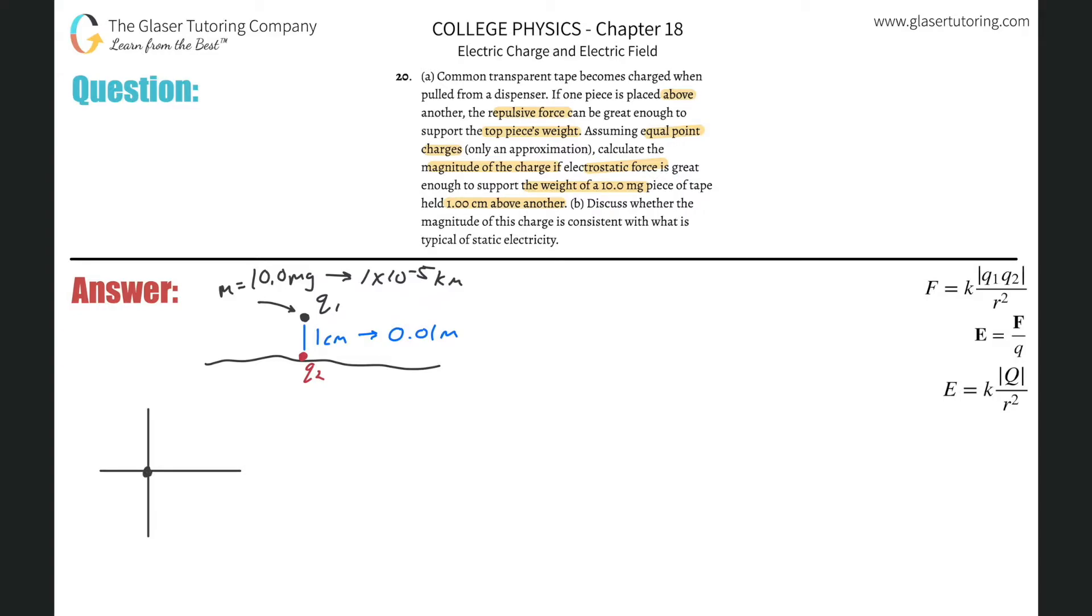Here's my axis. I'm going to put in the little dot there that represents q1. Q1 has a particular weight. They told us the mass is 10 milligrams, aka 1 times 10 to the minus 5 kilograms. But we know we can find the weight. The weight of this thing is simply going to be 1 times 10 to the minus 5 multiplied by 9.8.